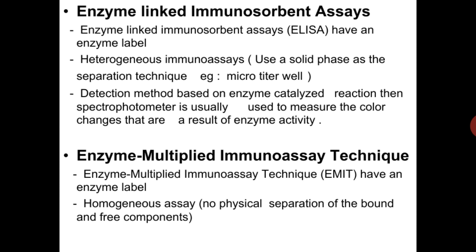Another method is Enzyme Multiplied Immunoassay Technique, or EMIT. EMIT uses an enzyme label and is a homogeneous assay — there is no physical separation of the bound and free fractions. An enzyme is used as the measurement signal instead of a radioactive label, unlike ELISA.